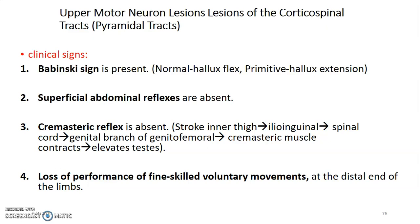The clinical signs of upper motor neuron lesions include Babinski sign. When you stroke the plantar aspect of the foot — normally from the lateral aspect, from the heel going toward the small toe then turning toward the big toe — there will normally be flexion of the hallux. But in upper motor neuron lesion, there will be hallux extension, a dorsiflexion of the big toe. This is a primitive reflex, normally positive in infants where reflexes are not well developed. In an adult there should be hallux flexion if normal, so if there is an upper motor neuron lesion, Babinski sign will be positive.